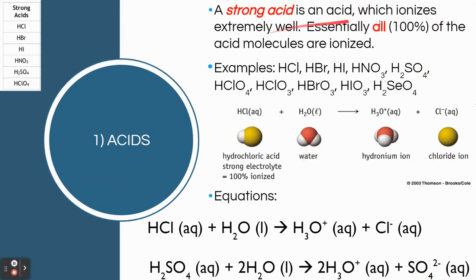A strong acid is something that ionizes very, very well — basically 100% will become ions. These are the six strong acids you should know; they ionize 100% in water. All other acids will be less than 100%. When written as gases or in their molecular forms, they exist as molecules without ions, but when you put them in water they ionize and become ions. This reaction goes all the way 100%, as you can see in these equations.